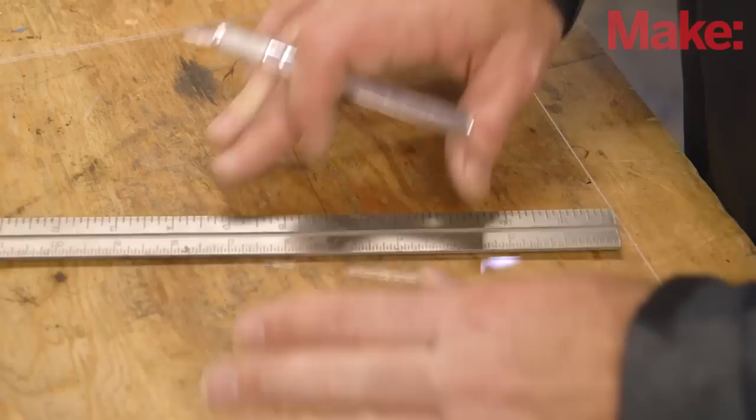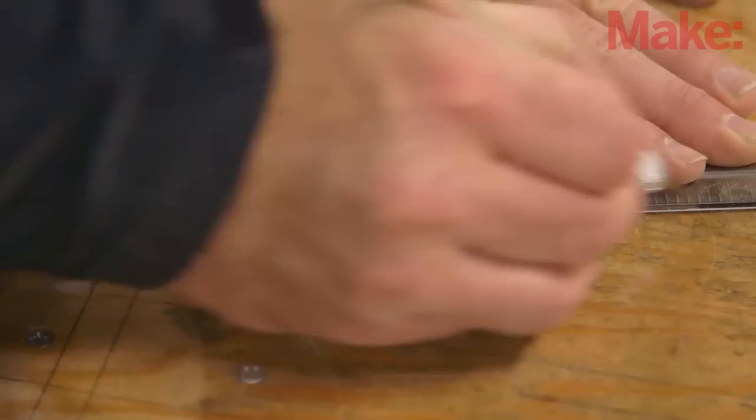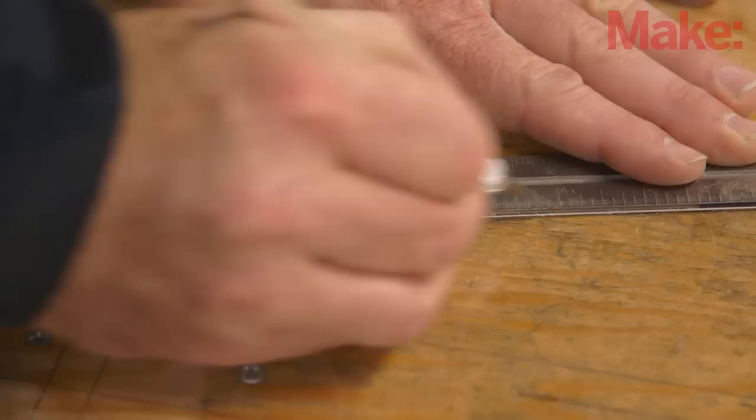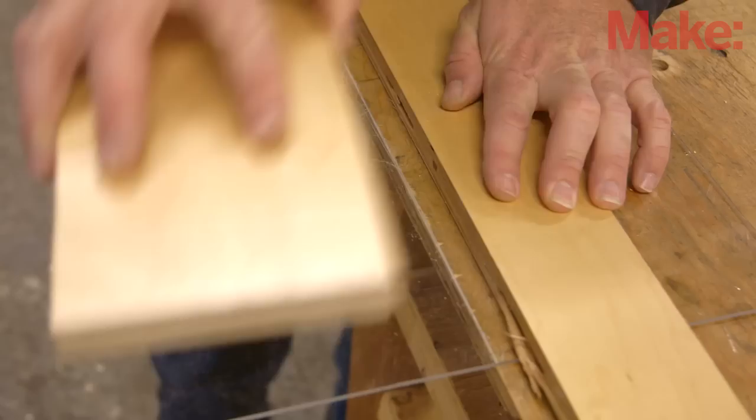Next we'll build the stand. Cut your plywood base down to a 7 by 7 inch square, then trim your plexiglass down to the same size. To cut the plexiglass, score the top surface with a utility knife. Make several passes and use a ruler to keep the cut straight.